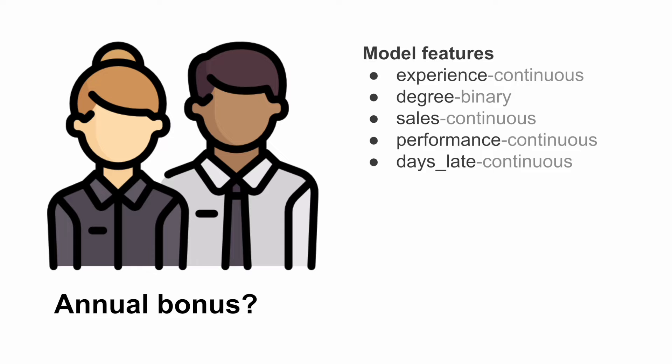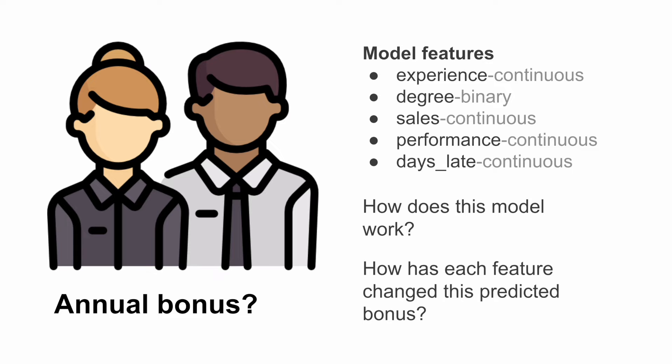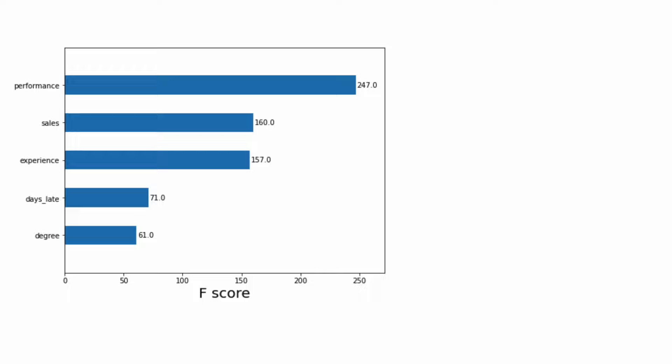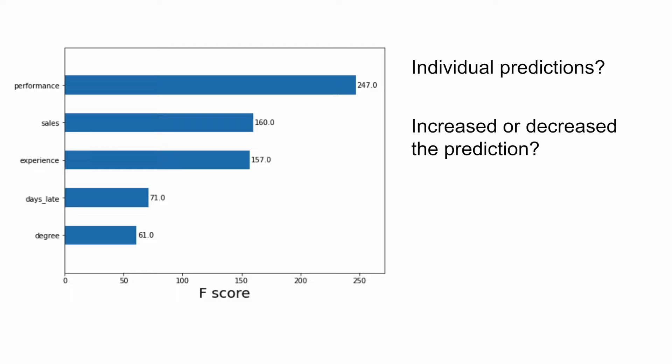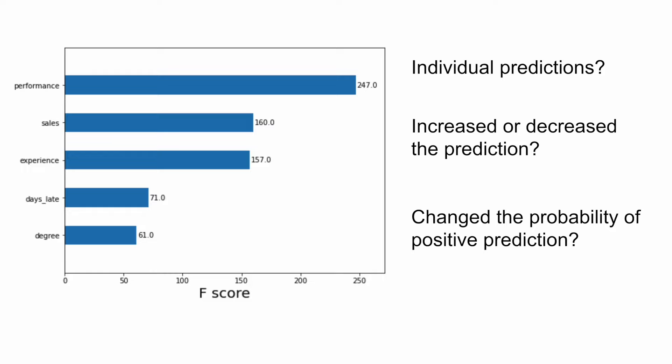HR may be curious about how this model works — they may even single out a specific employee and question how their predicted bonus was determined. You may be tempted to use feature importance to answer those questions, and sure, this can tell us how important each feature is to the model prediction in general. But what about individual predictions? Feature importance also cannot tell us if features tend to increase or decrease the prediction, or in a classification problem, how the features change the probability of a positive prediction.